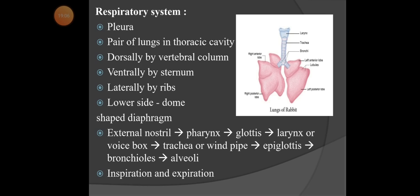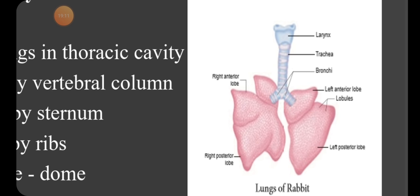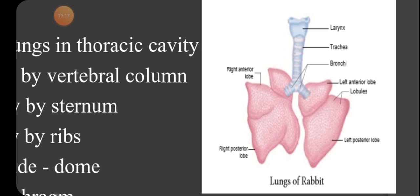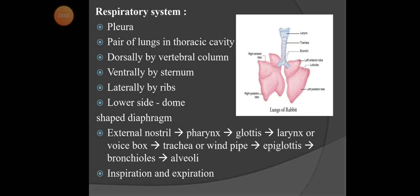The respiratory system of the rabbit is similar to that of humans. Respiration means inhaling useful (oxygen) gases and exhaling unwanted (CO2) gases. The lungs are the important organ for this. Looking at the diagram: at the top is the larynx, then the trachea (windpipe), which branches into two bronchi, and the bronchi further divide into bronchioles. There are two rose-colored lungs with left anterior and posterior lobes, and inside the lobes are many alveoli.